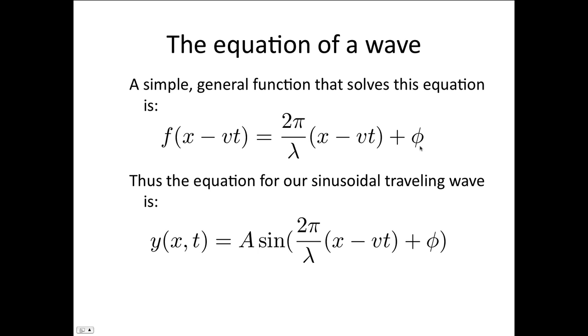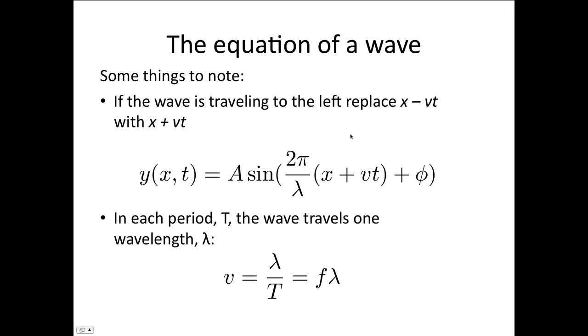So the φ is just there to make this very general, so that we can match any starting conditions. Now, some things to note. If the wave is traveling to the left, so in the negative x direction, we need to replace x - vt with x + vt. So this would be the equation for a wave traveling to the left.